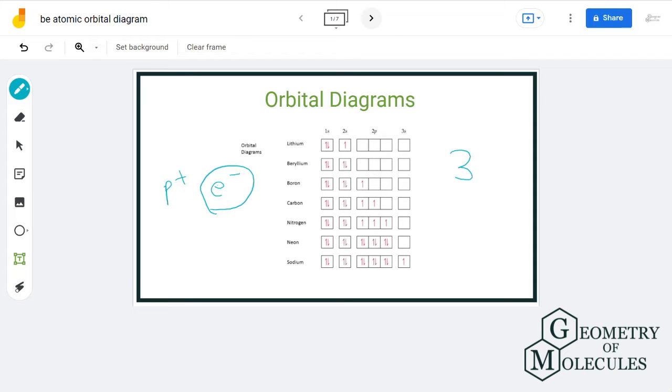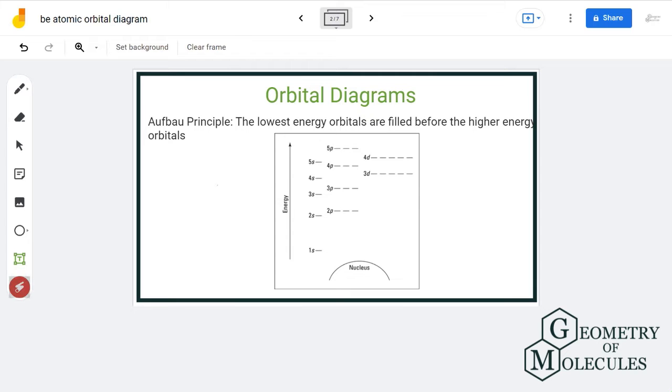Let us see what they state. The first rule is Aufbau's principle that arranges orbitals in terms of their energy levels. So down here we have 1s sublevel that has one orbital, then comes 2s sublevel, and so on. So the electrons will go in 1s orbital first and then move on to the orbitals having higher energy.